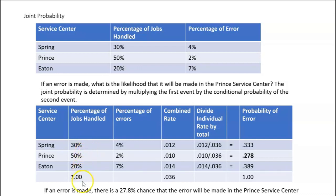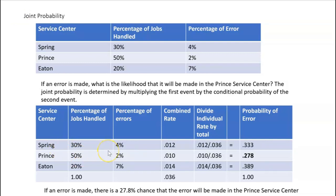Notice it has to add up to 1.0: Spring handles 30%, Prince handles 50%, and Eaton handles 20% — a total of 1.0. Now we want to know: if an error is made, what's the likelihood it will be made in the Prince service center? That joint probability is determined by multiplying the first event by the conditional probability of the second event. We have to take all three service centers into consideration.